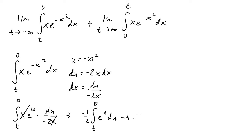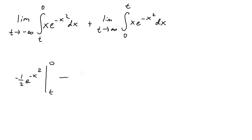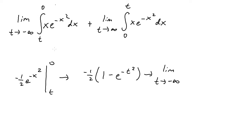Plugging in zero: e to the negative zero squared equals e to the zero equals one. Plugging in t gives e to the negative t squared. So we have negative one-half times one minus e to the negative t squared. Applying the limit as t approaches negative infinity: negative t squared becomes infinity, and e to the negative infinity equals one over e to the infinity, which approaches zero.